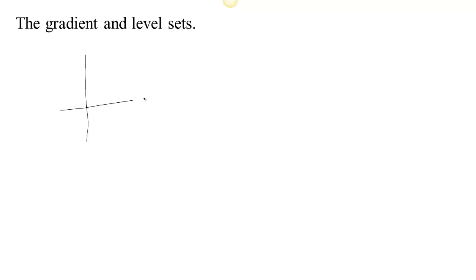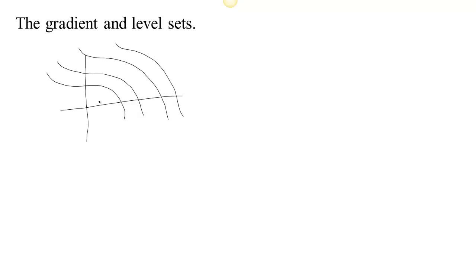Remember when we first talked about functions that have a vector input and a scalar output, we were looking at the idea of a level set. If our function had two inputs and one output, then our level sets were actually level curves. And so we get for a particular function something that looked a lot like a contour map — altitude one line, altitude two, line three, four, and five.